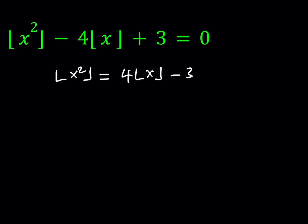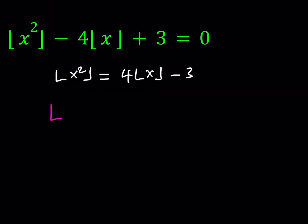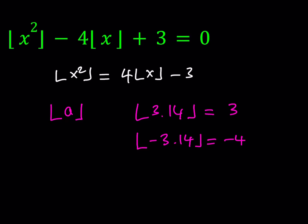Is x equal to 0 a solution? Nope, it's not. So let's remember the definition of the floor function. The floor value of any number a is defined as the greatest integer less than or equal to a — basically, you're rounding down the number. So the floor value of 3.14 gives you 3. On the other hand, the floor value of negative 3.14 is negative 4, because you're always rounding it down.